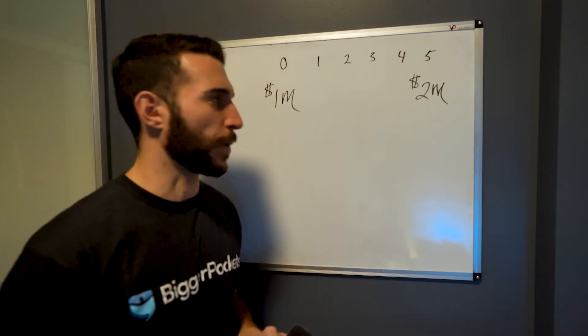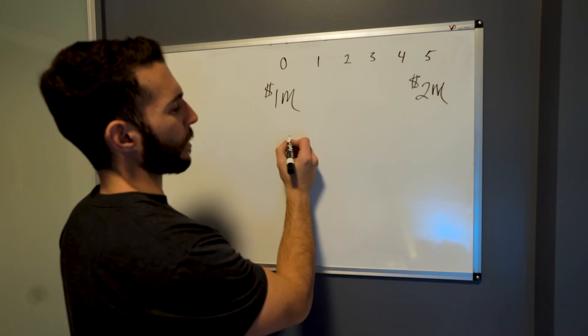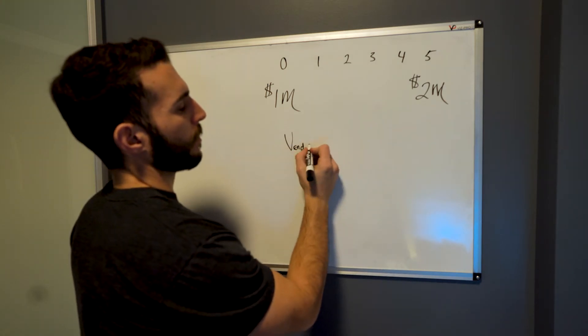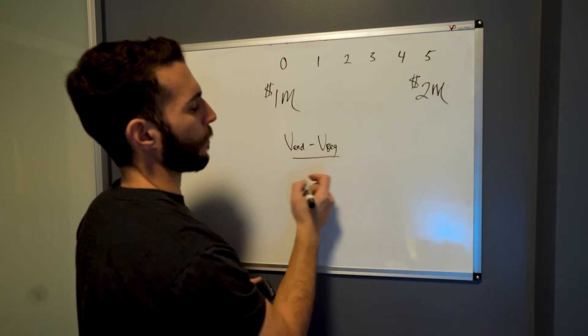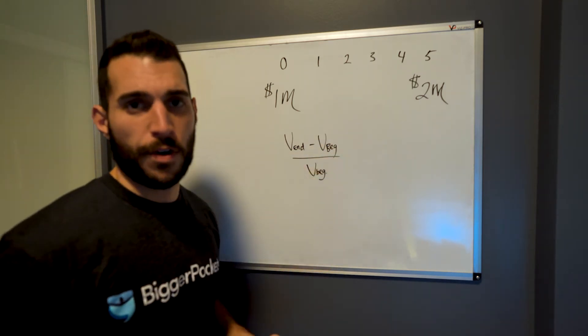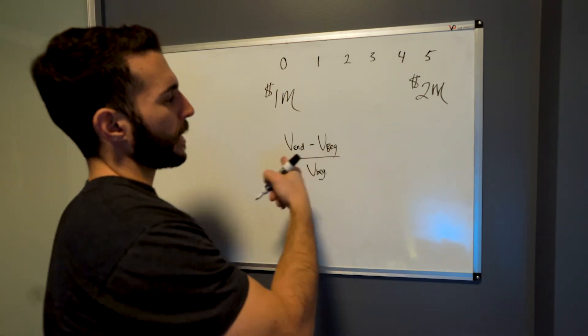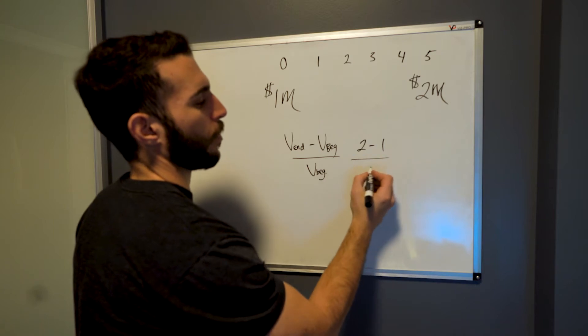So pretty substantial sale price. Now what we know about return on investment formulas is you usually see something like this: ending value minus the beginning value over the beginning value. Pretty standard to figure out a return on investment. Now if we take what we have here, we have 2 minus 1 over 1.